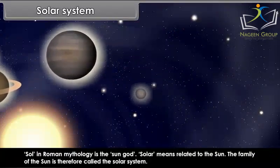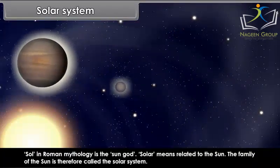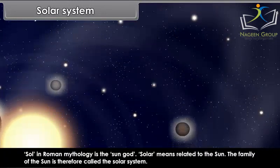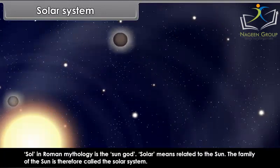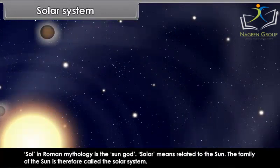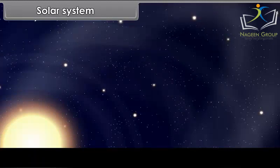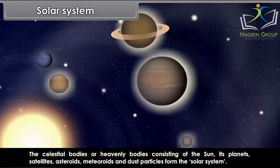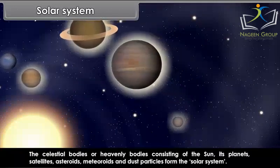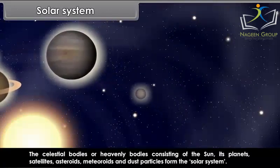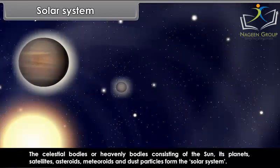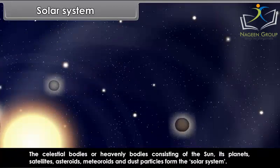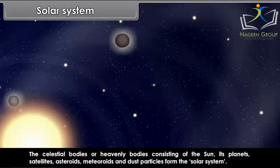Sol in Roman mythology is the sun god. Solar means related to the sun. The family of the sun is therefore called the solar system. The celestial bodies or heavenly bodies consisting of the sun, its planets, satellites, asteroids, meteoroids and dust particles form the solar system.